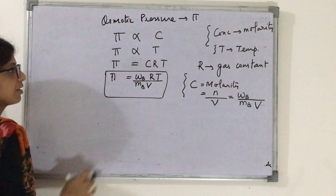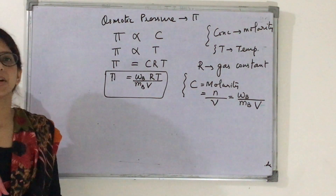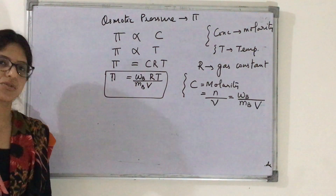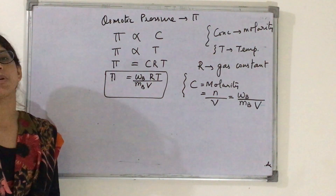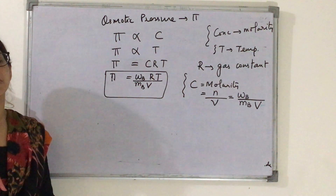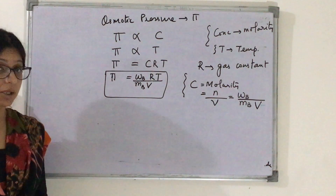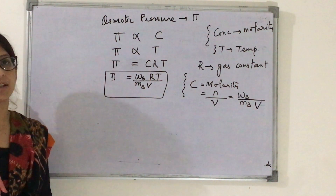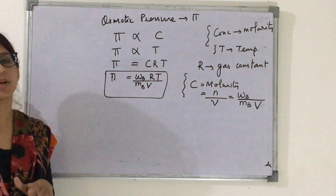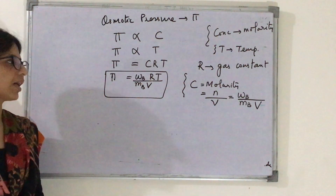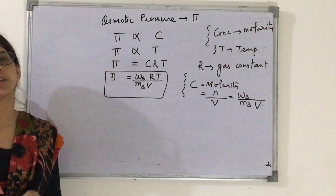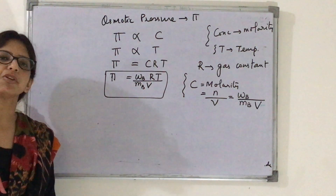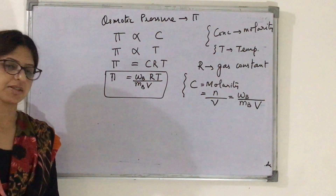So here we end this video. In the next video we are going to talk about association and dissociation. Meanwhile, I will send you WhatsApp question numbers from NCERT which I have already covered as numericals. Make sure you have done them in your registers. If you have any doubt, let me know and I will clear it. After that we will move forward with the numericals of colligative properties. Thank you.